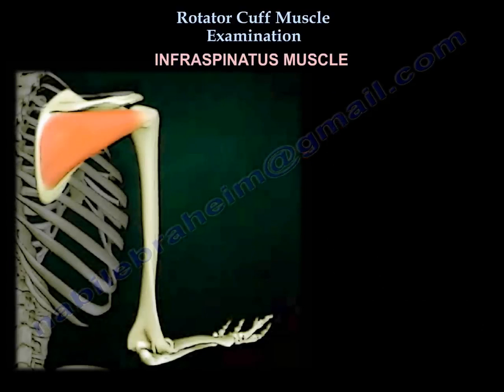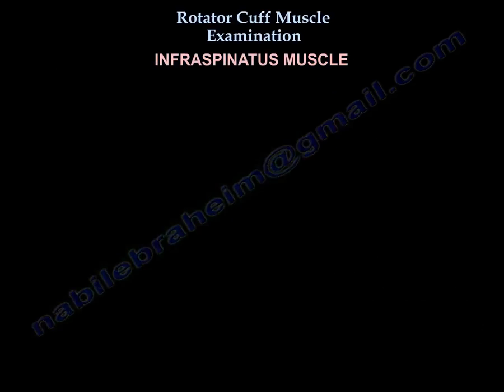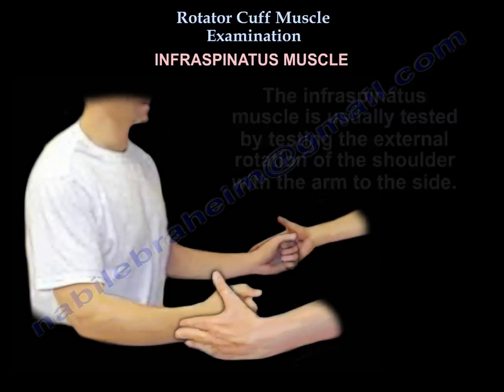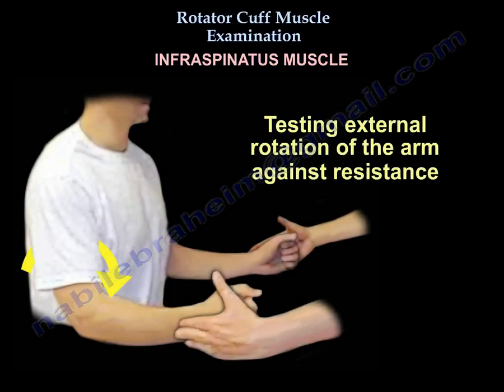The infraspinatus is a strong external rotator of the shoulder with the arm at the side. The infraspinatus muscle is usually tested by testing the external rotation of the shoulder with the arm to the side. Test external rotation of the arm against resistance.